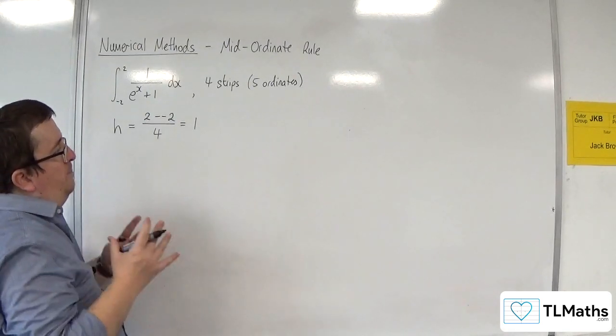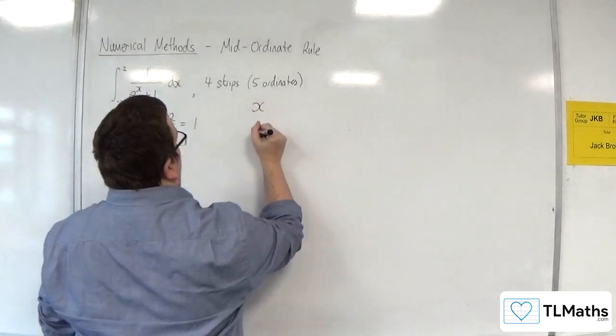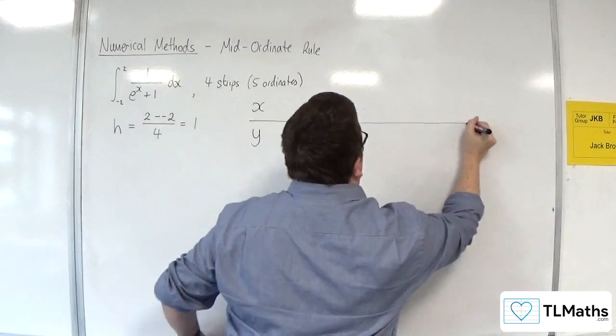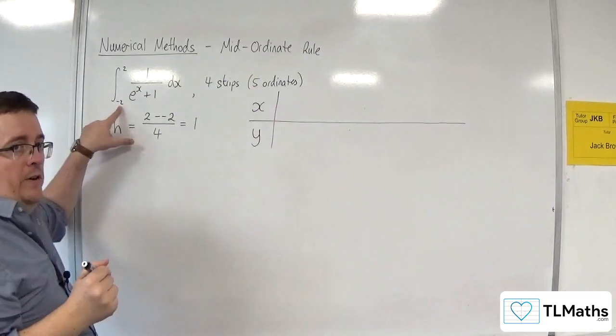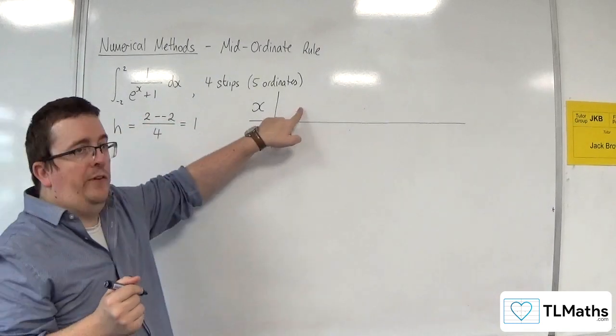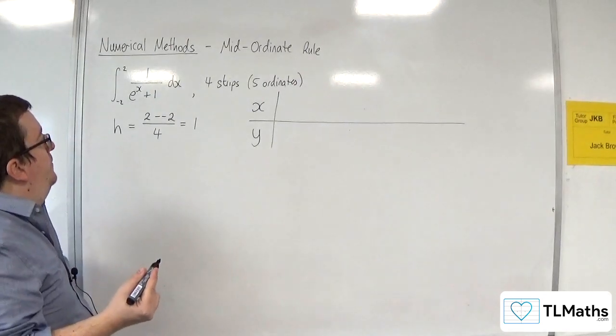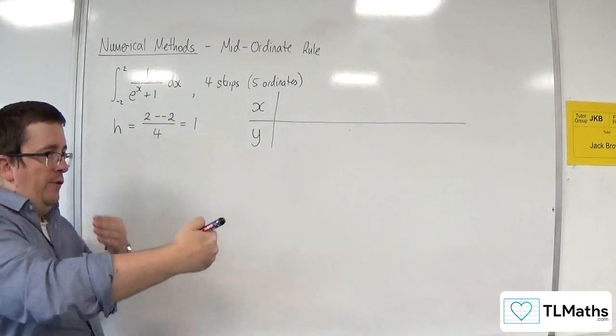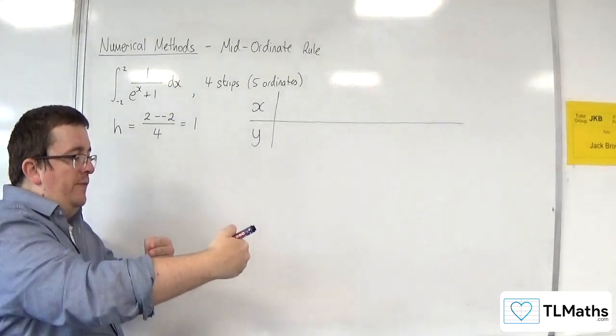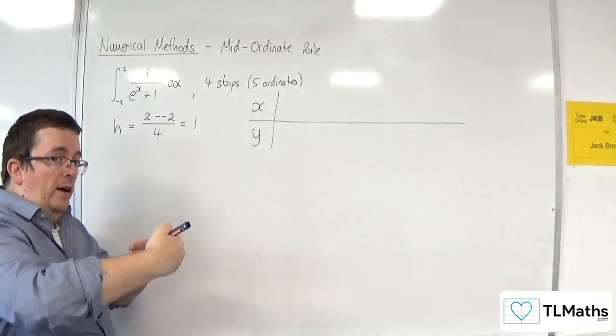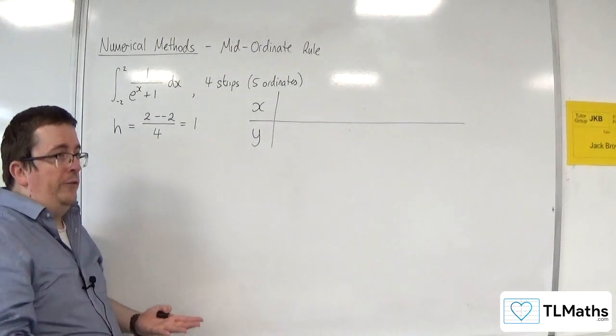So I'm then going to build up a table of values to use. I'm going to have x values and y values. And I know that it starts at minus 2, but that's not my first x-ordinate. Remember we're using the mid-ordinates here. So they're going up in 1s, each of the strips of length 1. So you want the midpoint of that. So that's a half. So the first one starts at minus 2 plus a half, which is minus 3 halves.